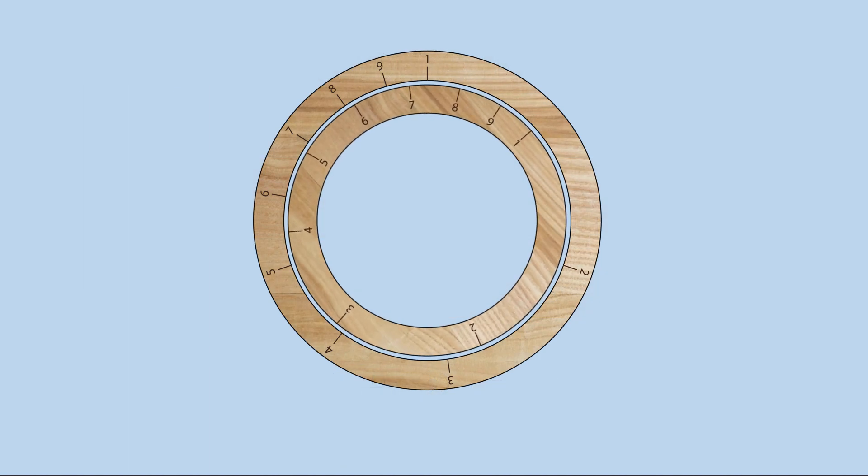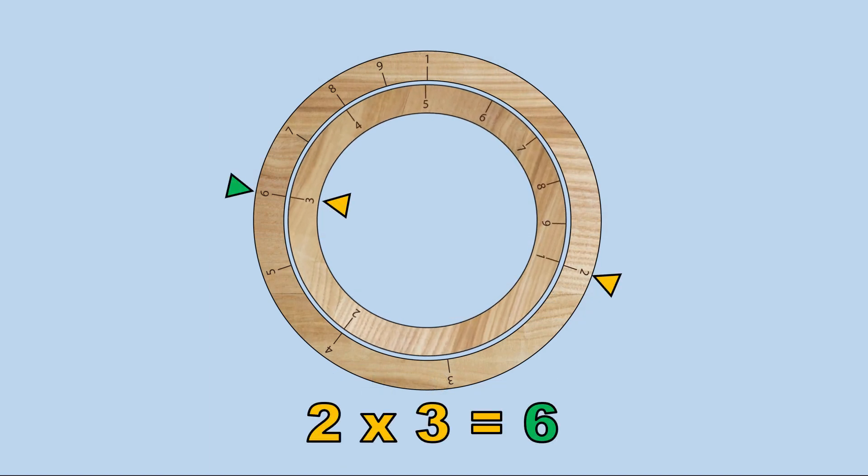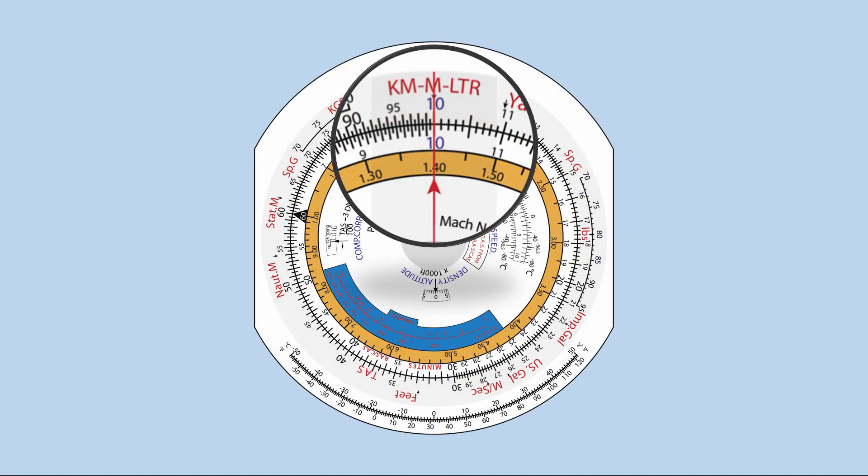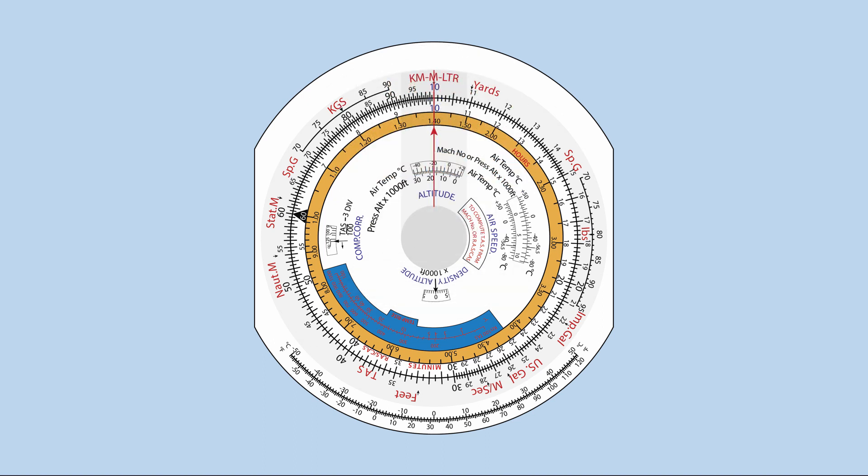Navigation computer turns our straight line slide rule into a circular one. Before using it, we need to look in detail at the scale. Notice that there is no number smaller than 10 or larger than 99. Therefore, we need to mentally insert the decimal point.